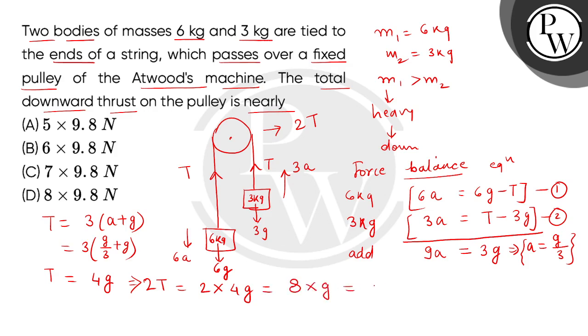When we put the value of G, this is nearly 8 multiplied by 9.8 N. So the correct answer is option D. Thank you.